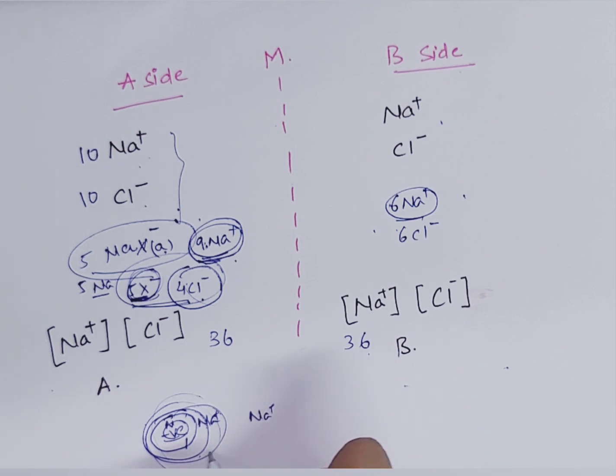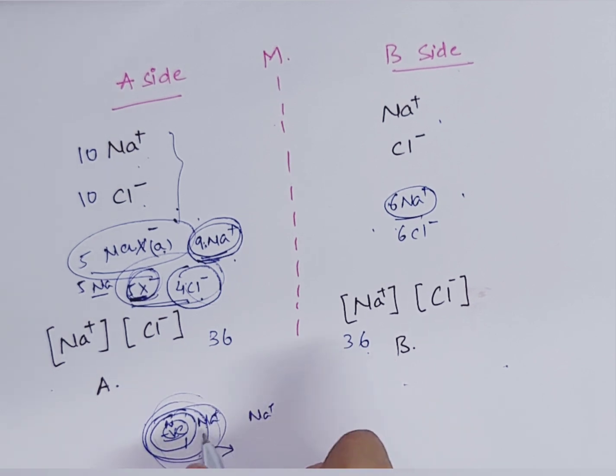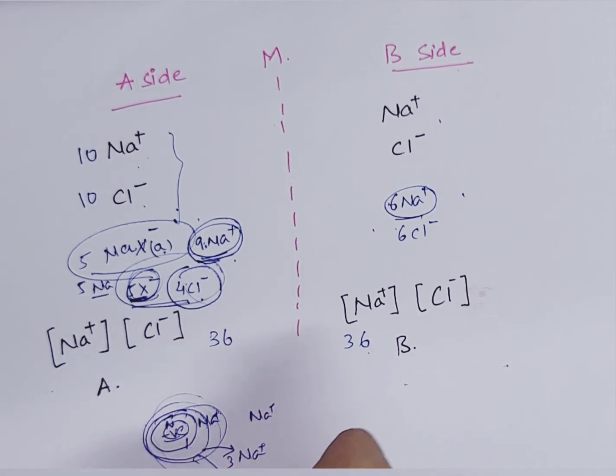So to prevent this, we have sodium potassium pump. What does it do? It moves three sodium ions out and two potassium ions in. So it maintains the volume of the cell. So this is our applied physiology.